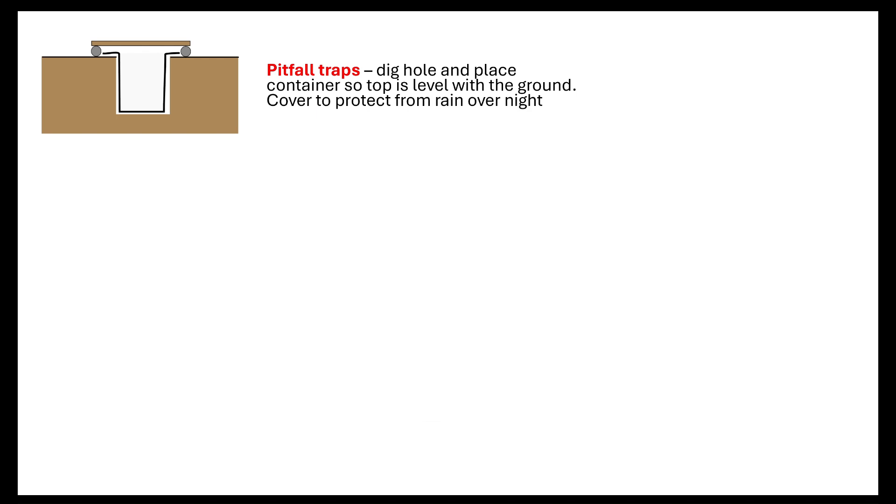There are other ways that we can sample organisms that can move around. Things like pitfall traps where you're going to dig a hole, you're going to place the container into the ground so that the top is level with the ground. You want those organisms to walk along and then fall into your pitfall traps and you need to ensure that it's covered overnight and that would protect from any rain that might come down. When I did my thesis and I was looking at the different species that I was able to identify in different areas of woodlands, this was what I used. I used pitfall traps.